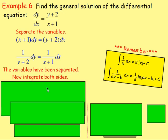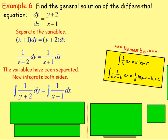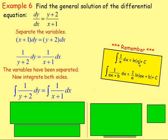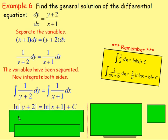So we integrate both sides — integrate 1 over (y plus 2) and integrate 1 over (x plus 1). Remember: if you integrate 1 over x, it goes to ln x. 1 over (ax plus b) goes to ln|ax plus b|, but divide by the derivative. If you differentiate y plus 2, you just get 1, so we write ln(y plus 2). And if you integrate 1 over (x plus 1), the derivative of x plus 1 is just 1, so it goes to ln(x plus 1), plus c.